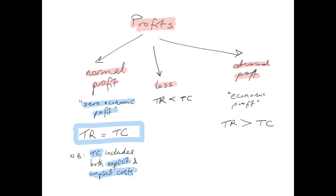A business earns a normal profit when it makes zero economic profit. A business makes a loss when its total revenue is less than its total cost. A business earns an abnormal profit — also called economic profit — when its total revenue exceeds its total cost. There is already a normal profit included within total costs, and on top of that the firm is earning an abnormal profit. It's very important to understand the difference between these three.